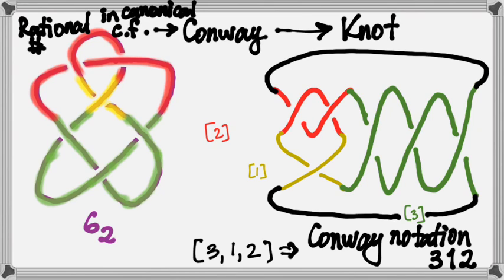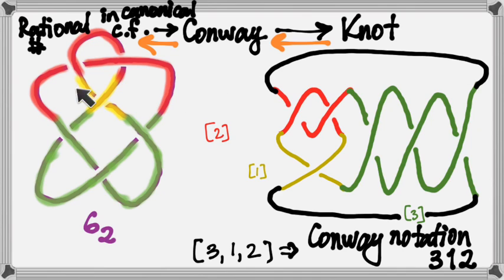If we know the Conway notation, we know exactly how to build a knot from it. And if we start with a rational number written in its canonical continued fraction form, we can turn that rational number into a Conway notation and use it to build a knot. So we know how to walk this pathway forward: somebody hands me a rational number, I can produce a knot out of it in this standard fashion. The question is whether going the other direction we're always going to end up with the same rational number. Let's figure out where to pin this knot down in order to make it the numerator closure of the 3-1-2 tangle.